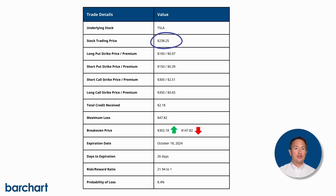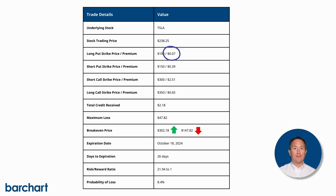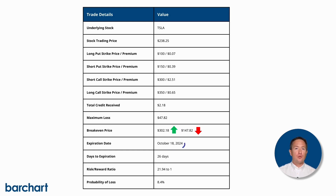Tesla's stock is currently trading at $238.25. For this trade, you'd sell the $300 strike call and collect $2.51 a share, and buy the $350 strike call for $0.65 a share. On the put side, you'll sell the $150 strike put and collect $0.39 a share, and then buy the $100 strike put for $0.07 a share. This setup results in a total credit of $2.18 a share, or $218 per contract. Your maximum loss on the trade is $47.82 per share, with breakeven prices at $302.18 and $147.82. All the options expire on October 18th, which is 26 days from the scan date, and the trade has a risk-reward ratio of 21.94 to 1, with an only 8.4% probability of loss.